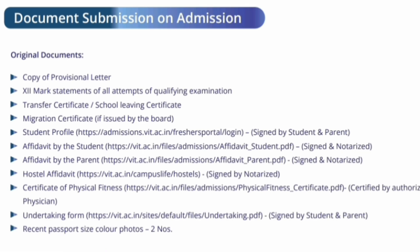For document submission on admission, you need to bring original documents including the provisional allotment letter, 12th mark statements of all attempts of the qualifying examination — in some states two attempts are given, so bring all of them — transfer certificate or school leaving certificate, and migration certificate if issued by the board.